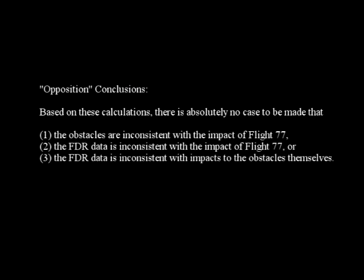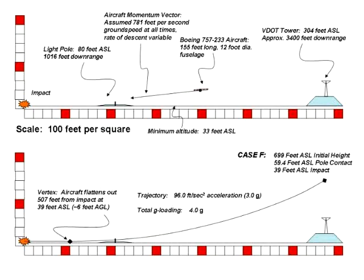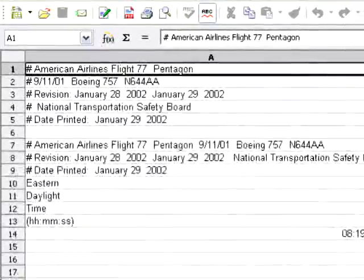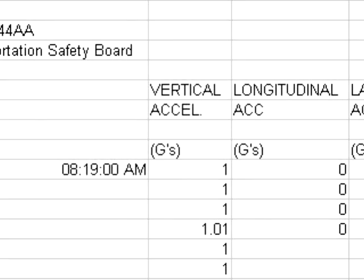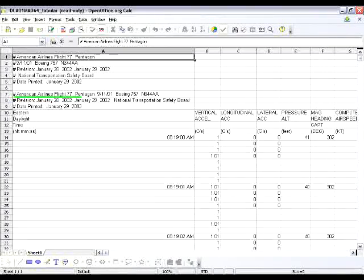This diagram also shows the most challenging scenario of a sustained 4G pull from the FDR altitude above the VDOT antenna through to being level across the lawn. Several conclusions were made based on this parabolic response to our article, which are also completely false. Based on these calculations, there is absolutely no case to be made that: 1) the obstacles are inconsistent with the impact of Flight 77, 2) the FDR is inconsistent with the impact of Flight 77, or 3) the FDR data is inconsistent with the impacts to the obstacles themselves. One look at the CSV file provided by the NTSB will readily prove these conclusions false.